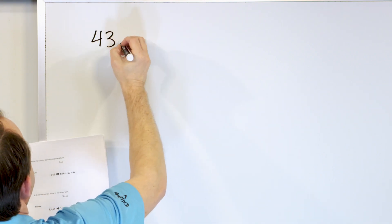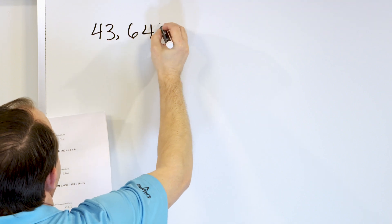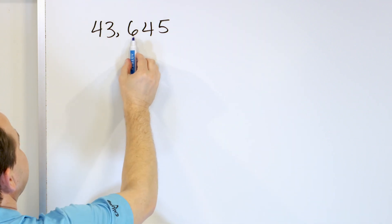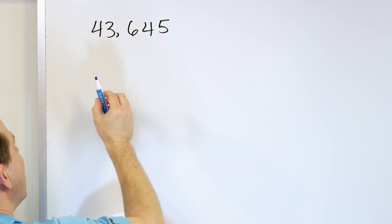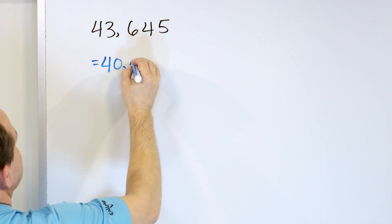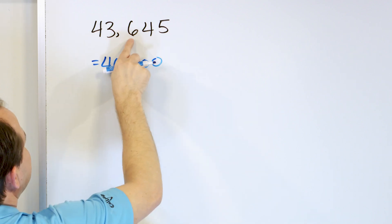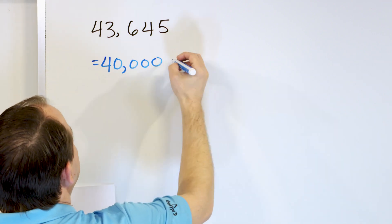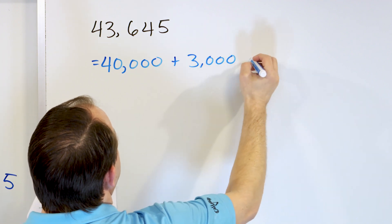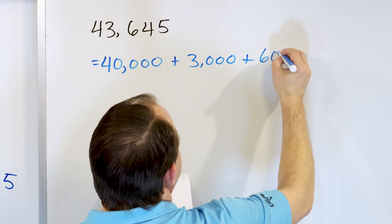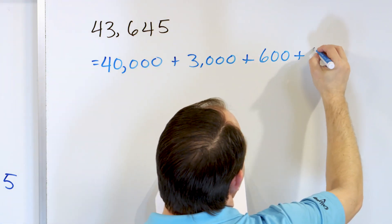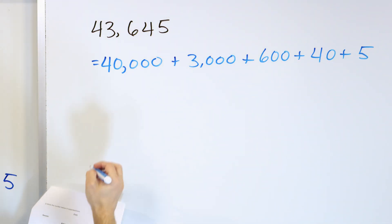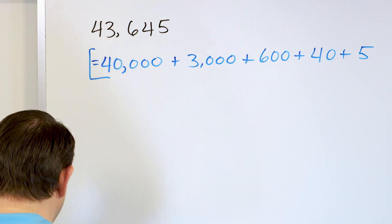What about 43,645? Let's write this down in expanded form. Here's the ones, tens, hundreds, thousands, ten-thousands. So this four is not worth four — it's really worth 40,000. Notice that the four stays the same but every digit after we just change to a zero, so it's really worth 40,000. The three is in the thousands place, so it's worth 3,000. The six is in the hundreds place, so it's worth 600. The four is in the tens place, so it's worth 40. And the five is in the ones place, which is just 5. So it's 40,000 plus 3,000 plus 600 plus 40 plus 5.